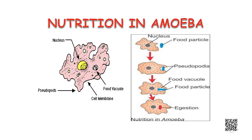Amoeba takes in food using temporary finger-like extensions of the cell surface called pseudopodia, which fuse over the food particle forming a food vacuole. Inside the food vacuole, complex substances are broken down into simpler ones which then diffuse into the cytoplasm. The remaining undigested material is moved to the surface of the cell and thrown out.